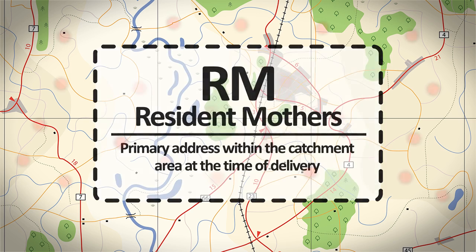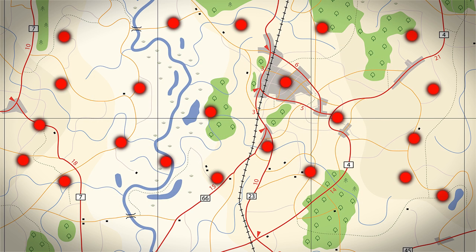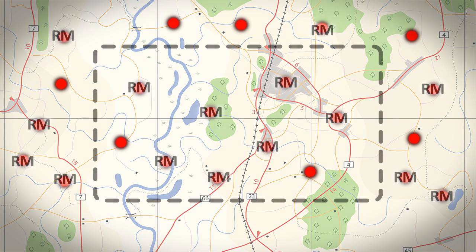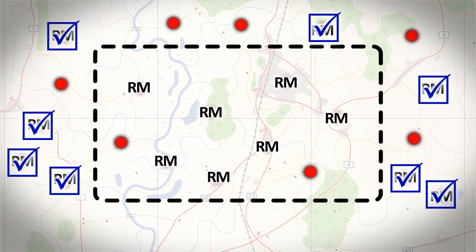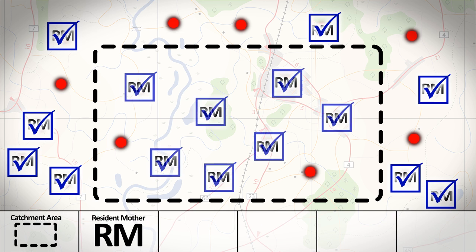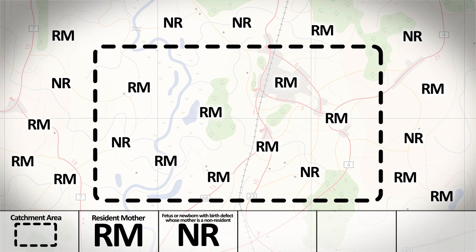With this definition in mind, there are two main points to consider regarding residency. If a resident mother gives birth outside of the catchment area, whether or not this birth is affected by a birth defect, ideally this birth should be counted because the mother is still considered a resident. If a non-resident mother gives birth inside the catchment area, her birth should not be counted in the surveillance program because the mother is not considered a resident.